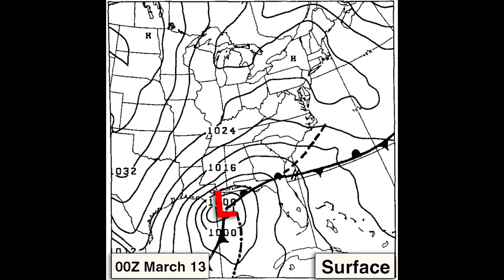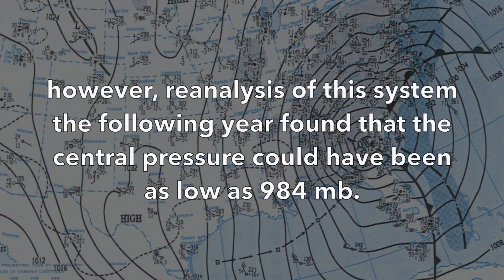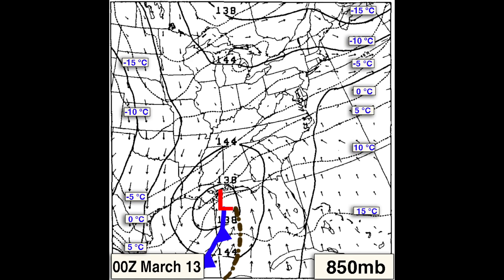Due to the expanding temperature gradient across the southern U.S. seaboard and adjacent Gulf waters, the westerly jet rapidly increased in speed. Research showed that the presence of such strong jet streaks is an indication of strong baroclinicity, which would determine the subsequent explosive deepening of the storm. At zero UTC on March 13th, the low was located over the warm Gulf waters about 150 kilometers south of New Orleans. Due to missing observations in the regional data assimilation system, the central pressure was analyzed at 992 millibars, though reanalysis the following year suggested it could have been as low as 984 millibars.